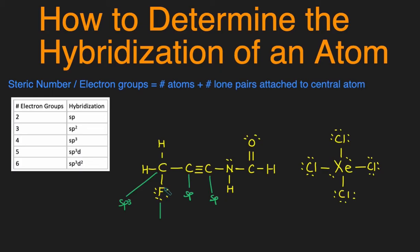We first look at how many groups are attached to this fluorine. We have 1, 2, 3, 4. Lone pairs do count as electron groups. So this has 4 electron groups, which means its hybridization would be sp3.